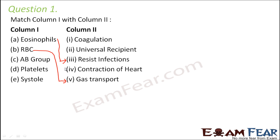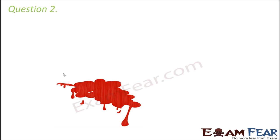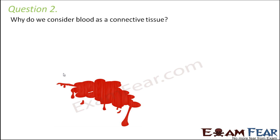AB blood group is the universal recipient — it can receive blood from any other blood group, whether AB, A, B, or O. Platelets help in blood clotting, that is coagulation. Systole is the term for contraction of the heart or its chambers — systole means contraction of the heart.